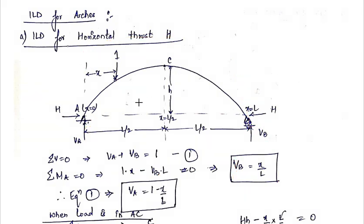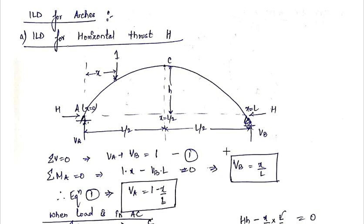There will be two cases: when the rolling load is in part AC, and when the rolling load is in part BC. For both cases, the values of VA and VB will remain the same, because we are measuring distance x from support A regardless of which portion the load is on. So now we will consider these two cases and find the values of horizontal thrust for each.